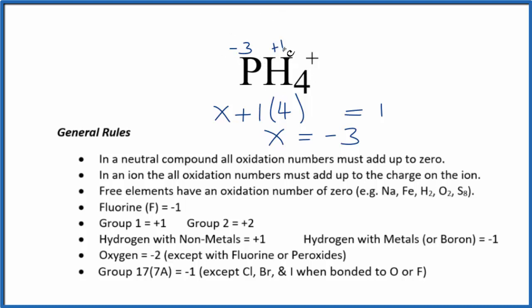these up: 4 times 1, that's 4. 4 plus -3 gives us 1+, the ionic charge on the PH4+ ion. This is Dr. B, thank you.